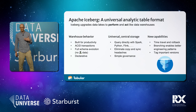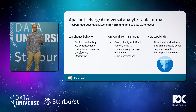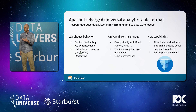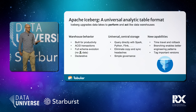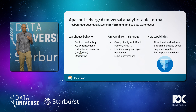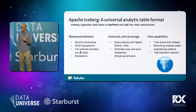The first thing I want to talk about is what Apache Iceberg is. We talk about it as a universal analytic table format. Iceberg really upgrades what a data lake is to be more like a data warehouse. It provides a lot of the benefits and behaviors of a data warehouse on top of object storage. It also brings new capabilities like time travel, branching, and tagging.